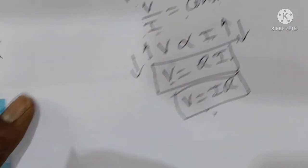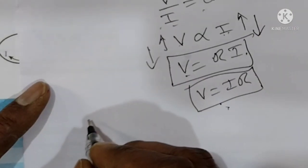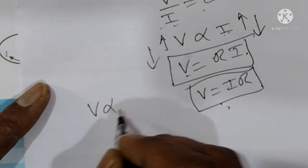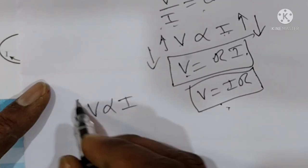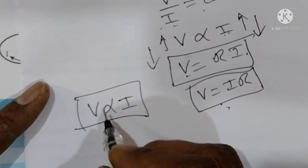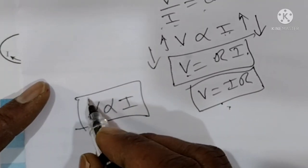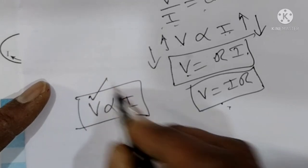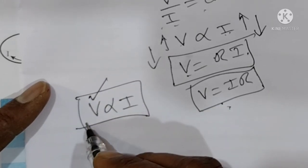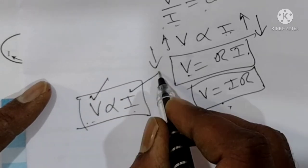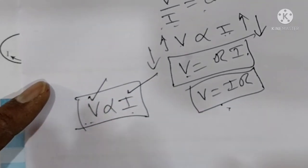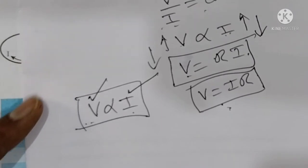Ohm's Law definition: V is proportional to I when temperature is constant. The potential difference or voltage is directly proportional to the current. That is the definition.